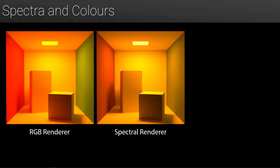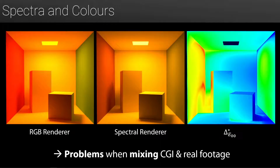A spectral renderer, contrary to its RGB counterpart, basically transports and attenuates spectra instead of colors. This provides much more accurate results in terms of color accuracy, which is especially important when you want to mix real footage with CGI scenes.